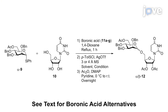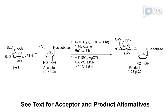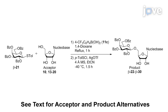To begin, optimize the reaction conditions for the synthesis of compound alpha and beta-12 as described in the TEX protocol. Next, apply the optimized reaction conditions to the synthesis of beta-22 to beta-30, as well as for beta-33, using a similar procedure.